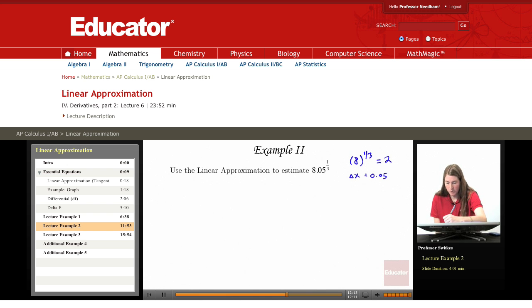We're looking at a function f of x equals x to the 1 third, so f prime of x is 1 third x to the negative 2 thirds. We're looking at a special value a equals 8, and again f of 8 is cubed root of 8, which is 2.